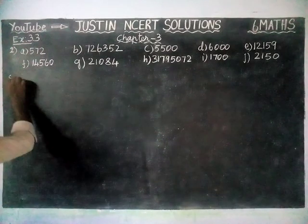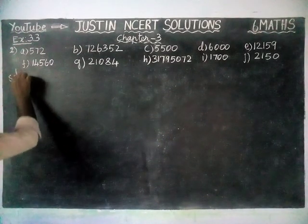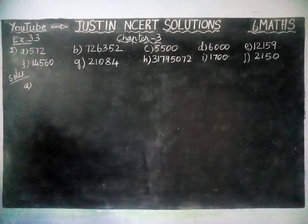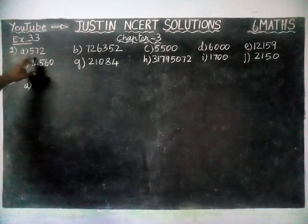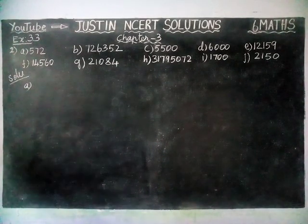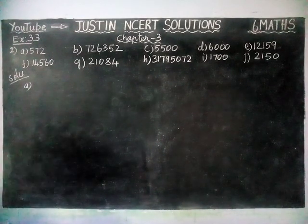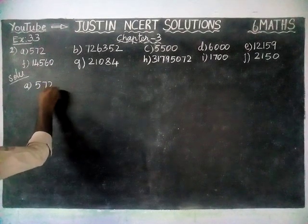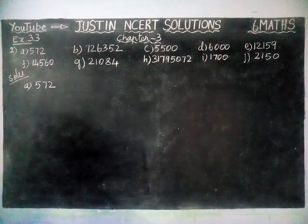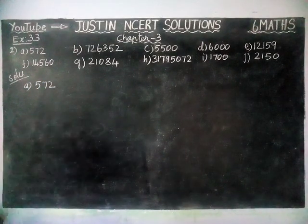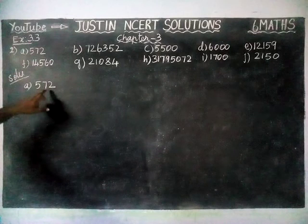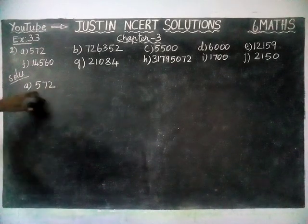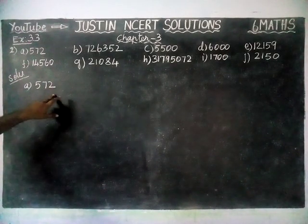Now, the first question, option A. We are going to check whether the number is divisible by 4 and divisible by 8. First we are going to check for divisibility by 4. According to the divisibility rule, if the last 2 digits are divisible by 4, then this number is divisible by 4.